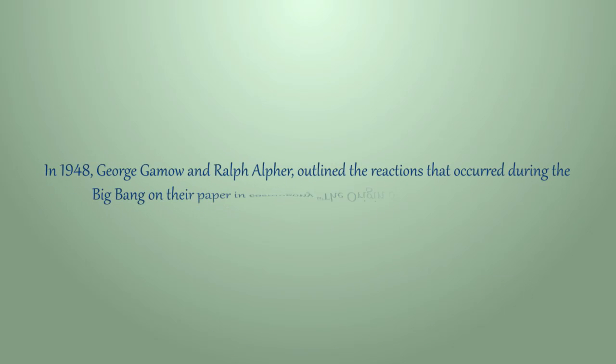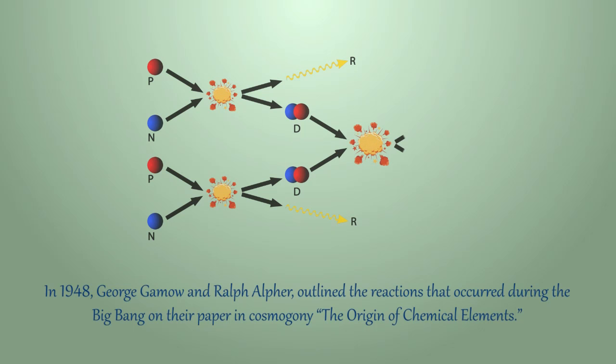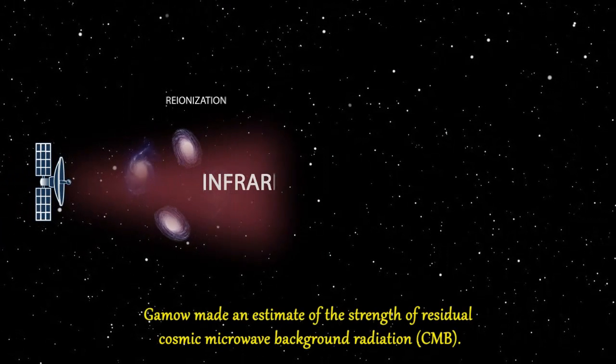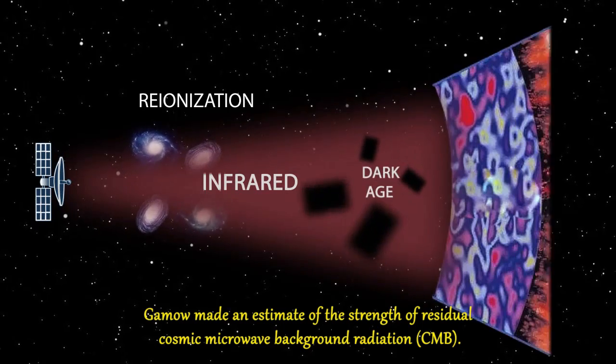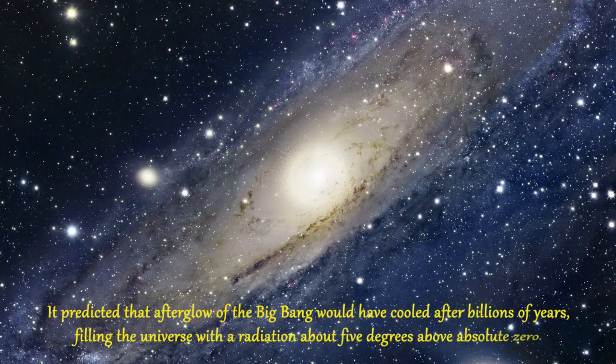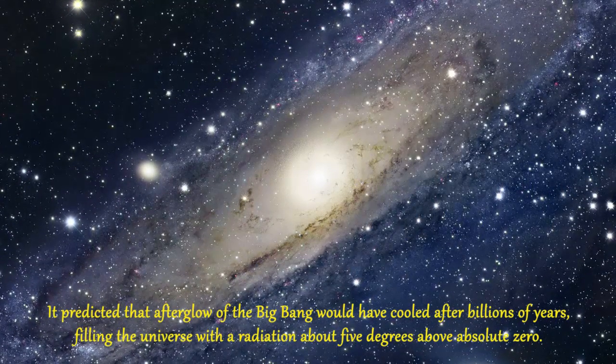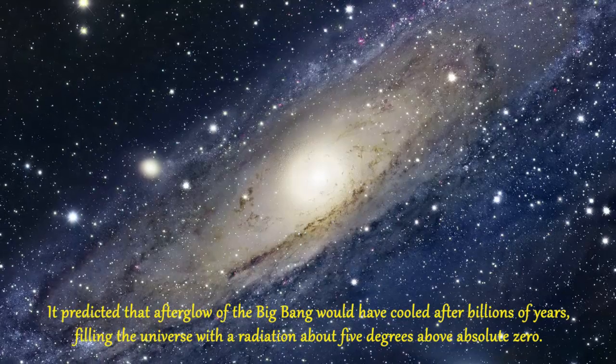Lastly, in 1948, George Gamow and his student Ralph Alpher outlined how the present levels of hydrogen and helium in the universe could be largely explained by reactions that occurred during the Big Bang in their paper in Cosmogony, The Origin of Chemical Elements. Gamow made an estimate of the strength of residual cosmic microwave background radiation CMB, predicting that the afterglow of the Big Bang would have cooled after billions of years, filling the universe with a radiation about 5 degrees above absolute zero.